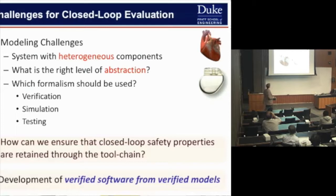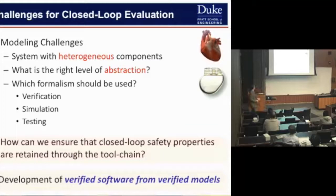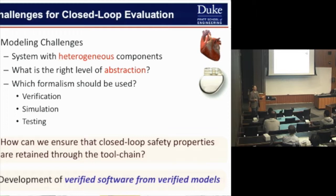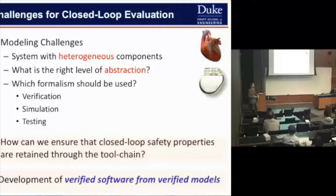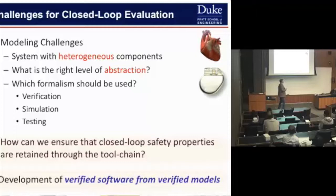The problem is that you have a very heterogeneous system: discrete software on one side, and the very continuous and messy behavior of the heart on the other. If you try to model the heart with very high fidelity, you might end up with something realistic but useless for analyzing software behavior. What you want is the right level of abstraction that allows you to verify the model, use it for simulation, and use it for testing — going through these phases without needing to recheck properties that have already been proven at a particular level.